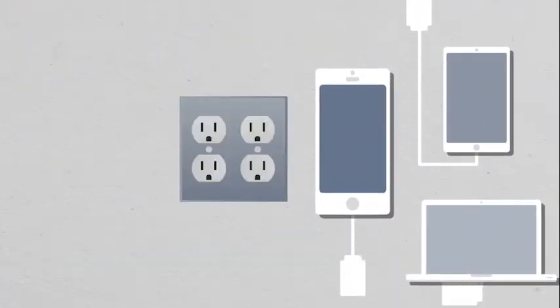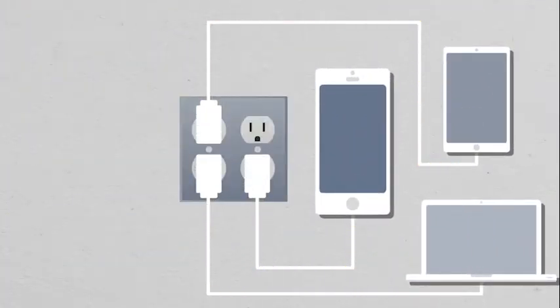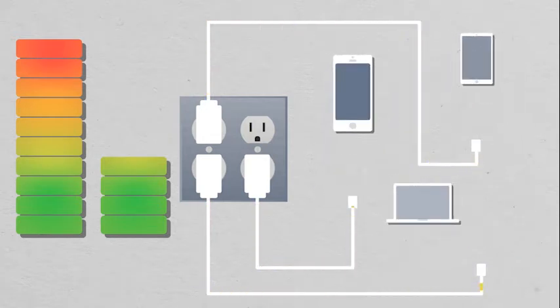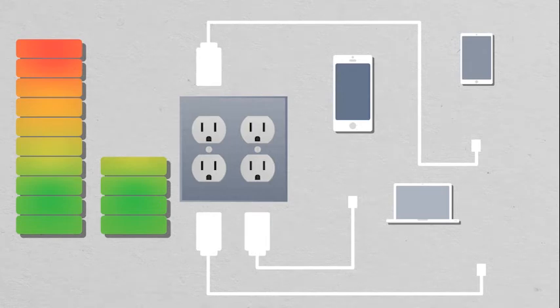Many electronics continue to use energy even after they've been turned off. This is called a phantom load. Cell phone chargers are one of the biggest offenders. They use the same amount of energy whether a phone is plugged in or not. Simply unplug electronic items when not in use and you're already saving money on your monthly bill.